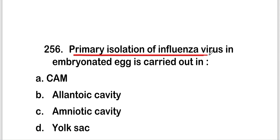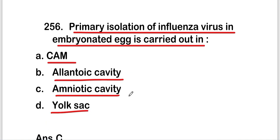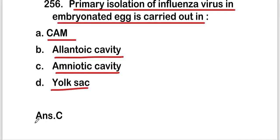The next question: primary isolation of influenza virus in an embryonated egg is carried out in the CAM, allantoic cavity, amniotic cavity, or yolk sac? The right answer is option C — amniotic cavity. Primary isolation of influenza virus in an embryonated egg is carried out in the amniotic cavity.